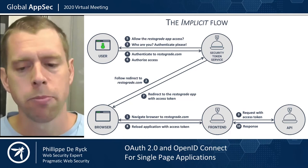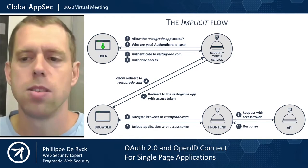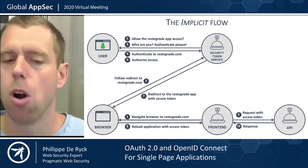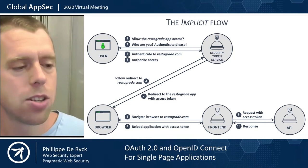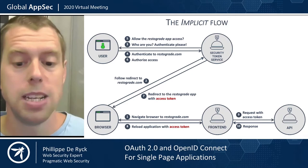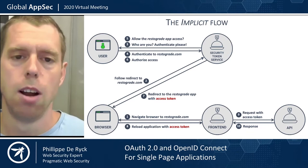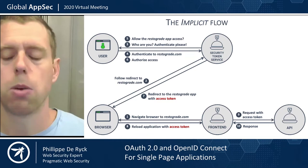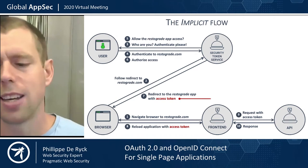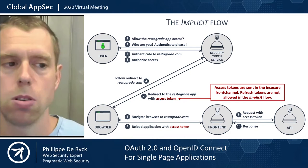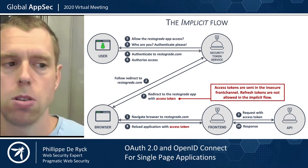People sometimes dislike the implicit flow. It's one of the simpler flows in OAuth — that's one of the benefits — but it has a glaring problem. The access token is being transferred in the front channel through the browser. That means if somebody is observing the network traffic, they can steal that access token right there from the URL. Fortunately, this is no longer as big a problem as 10 years ago when this spec was created, because today everything runs on HTTPS. Nonetheless, it's not a good practice to put things in URLs. Also, this pattern is the reason the implicit flow does not support refresh tokens, which would allow long-term access in the name of the user.